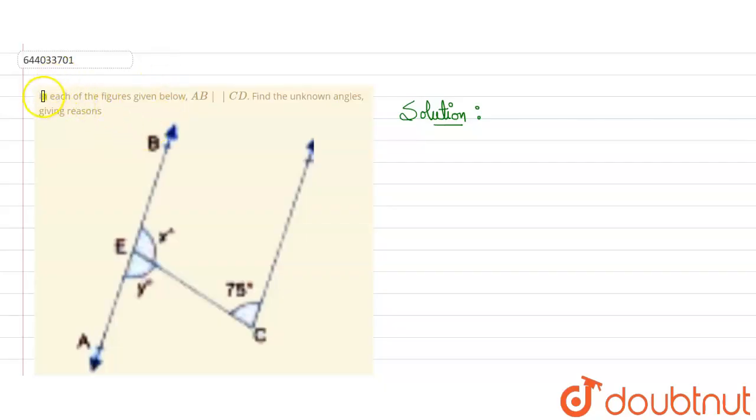Hello everyone, in this question it is given that in the following figure, AB is parallel to CD. Two lines are parallel, then find the unknown angles and give reason.